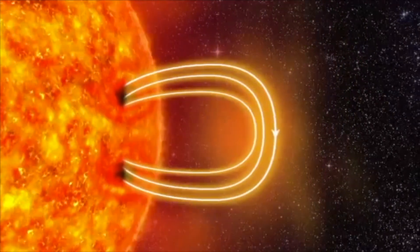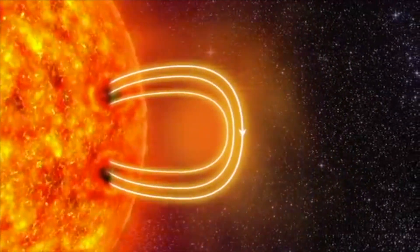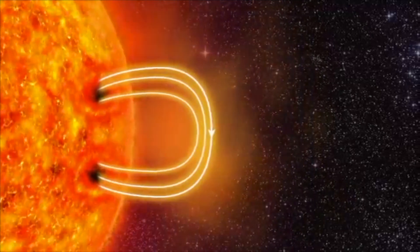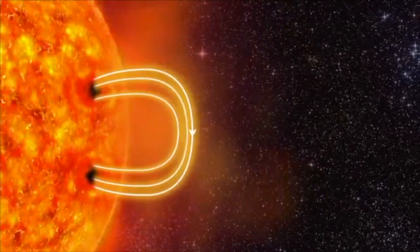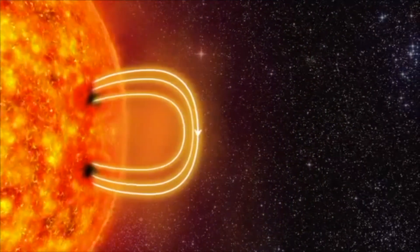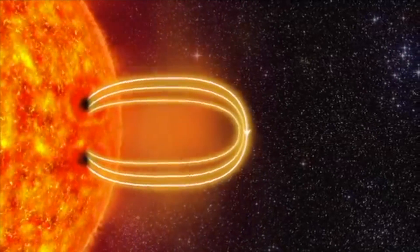The electrically charged gas is called plasma. The plasma drags the magnetic field further outwards. The magnetic field stretches and twists like a rubber band.